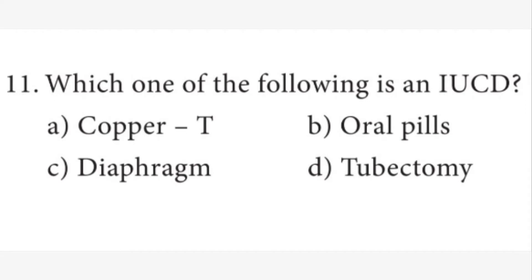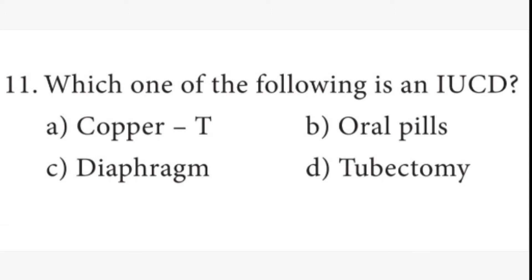Eleventh question: which one of the following is an IUCD? IUCD means intrauterine contraceptive device. This device or contraceptive device is inserted into the uterus. There are two synthetic devices commonly used in India: Lippes loop and copper T. Answer is A option, copper T. That is the IUCD, copper T.